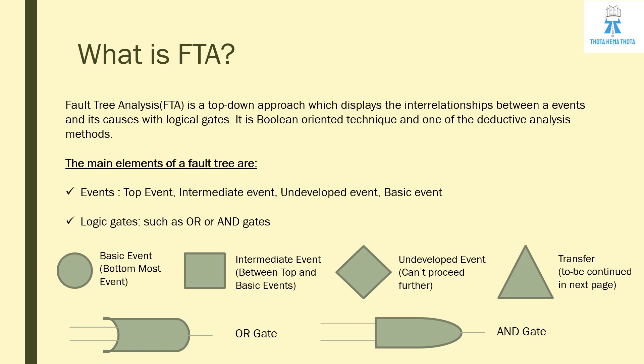The intermediate event sits between the top and basic events. The undeveloped event is represented as a rhombus — used when we don't have enough data to find the root cause, or there are resource constraints to dig further. The basic event is the bottom-most event, represented as a circle or ellipse, where we write the description. A triangle represents a transfer — meaning the analysis is to be continued in the next phase. We also have OR gate and AND gate, which will be explained further.